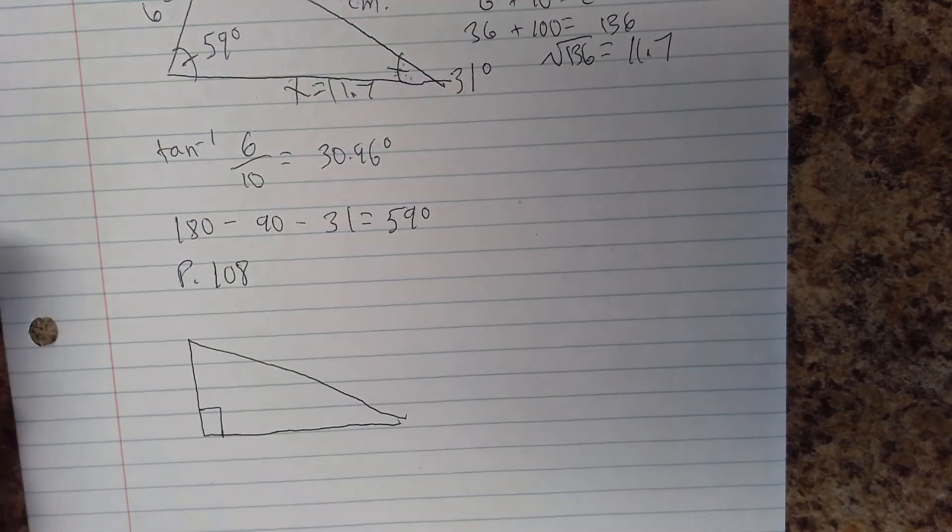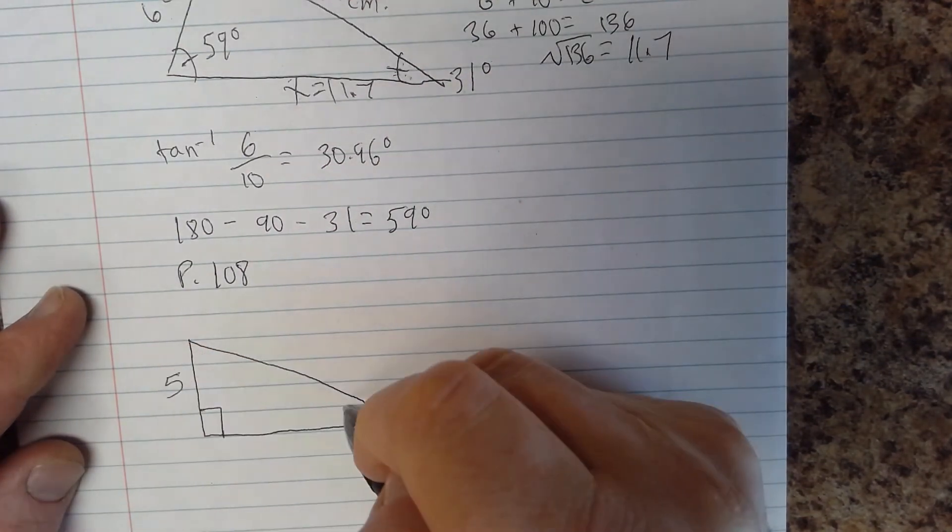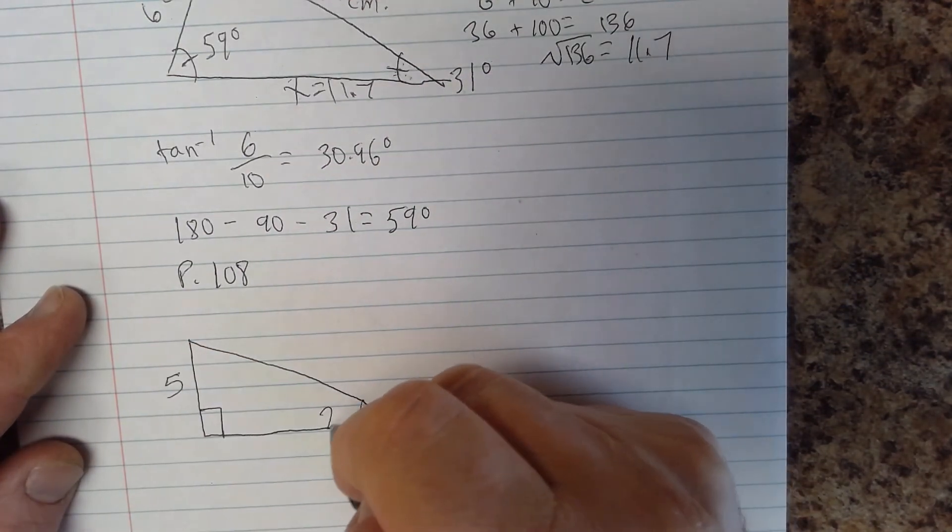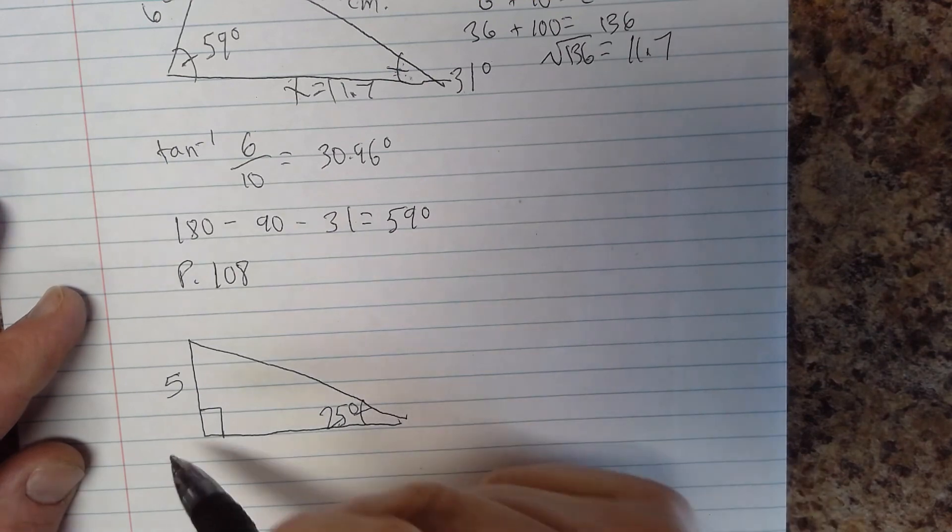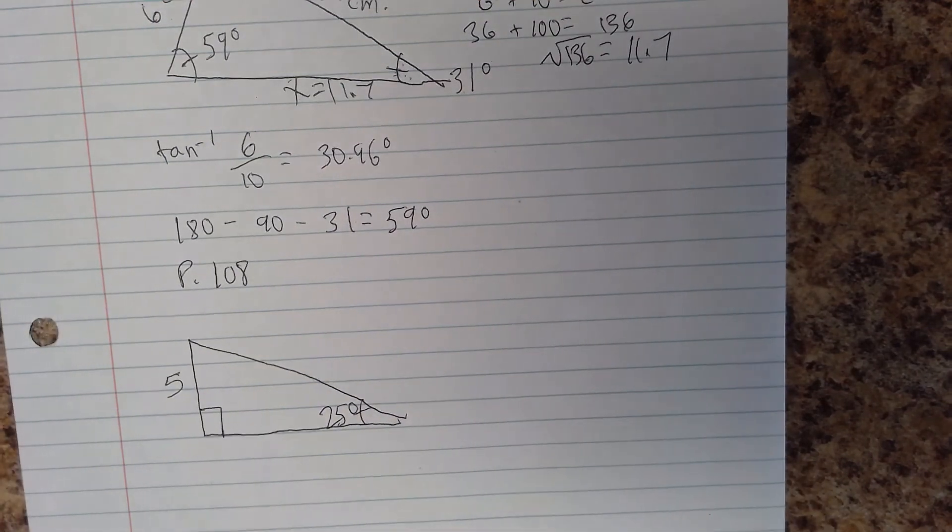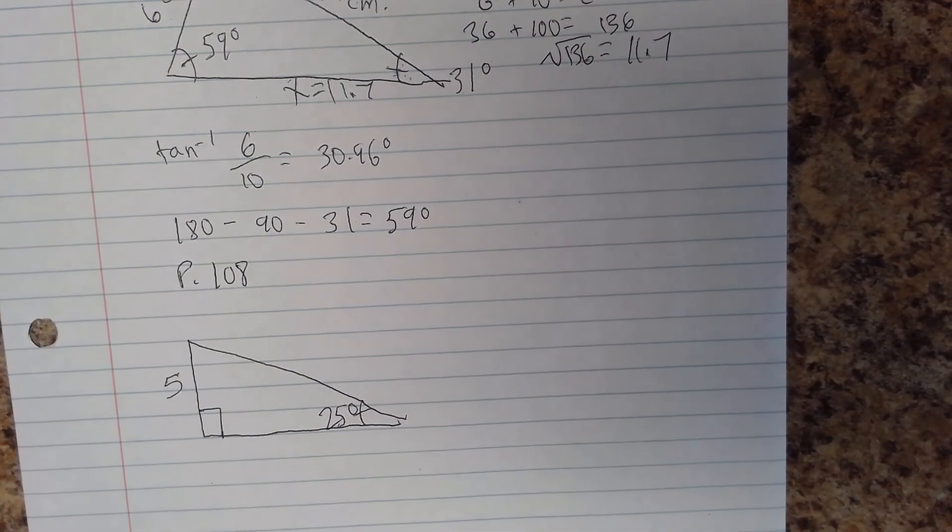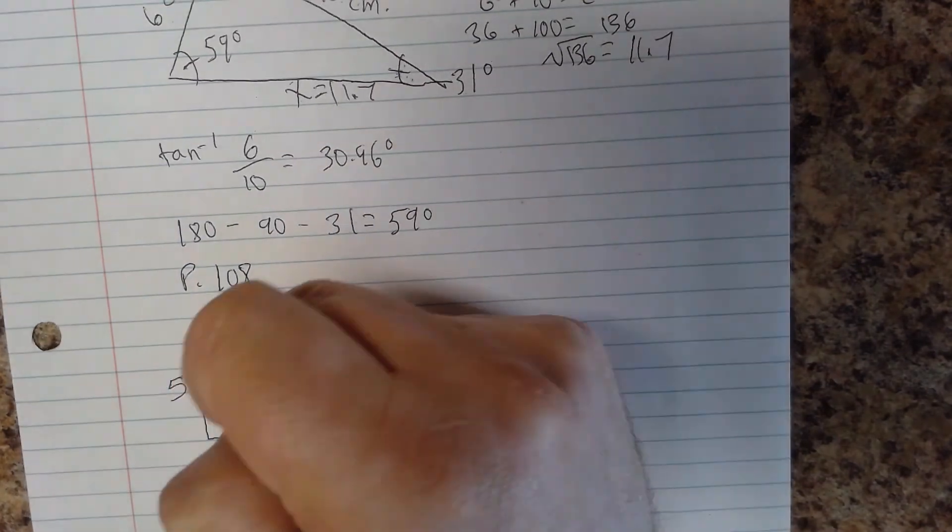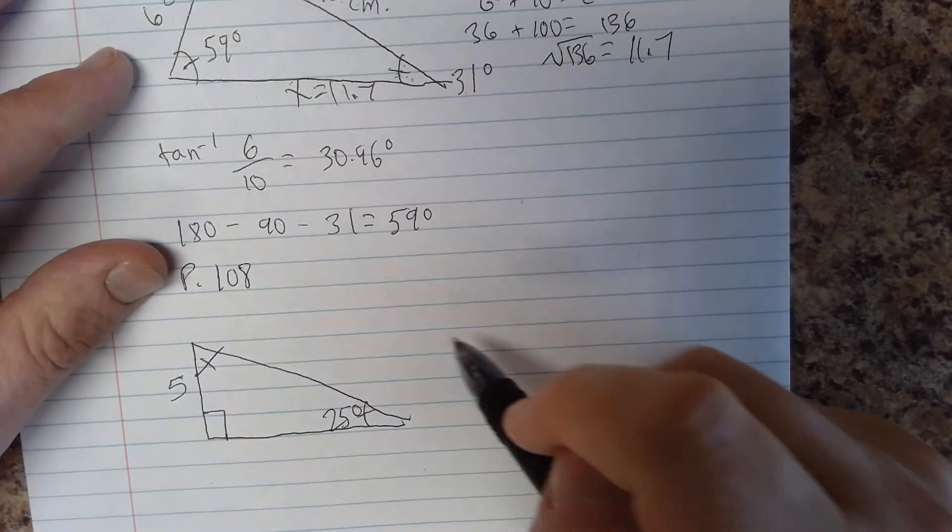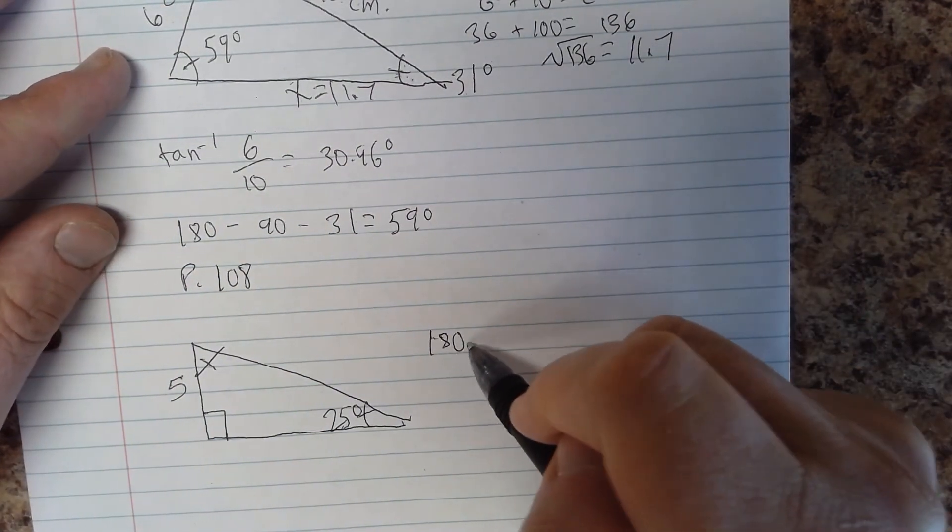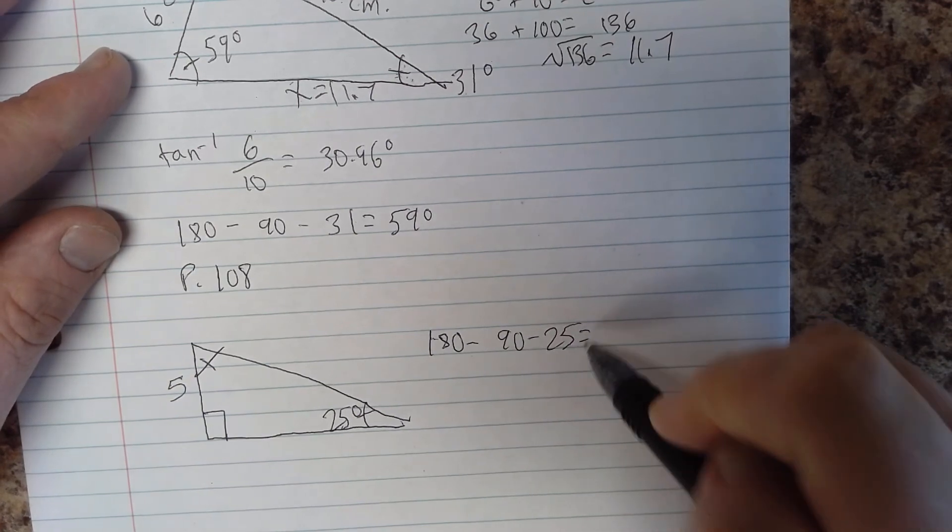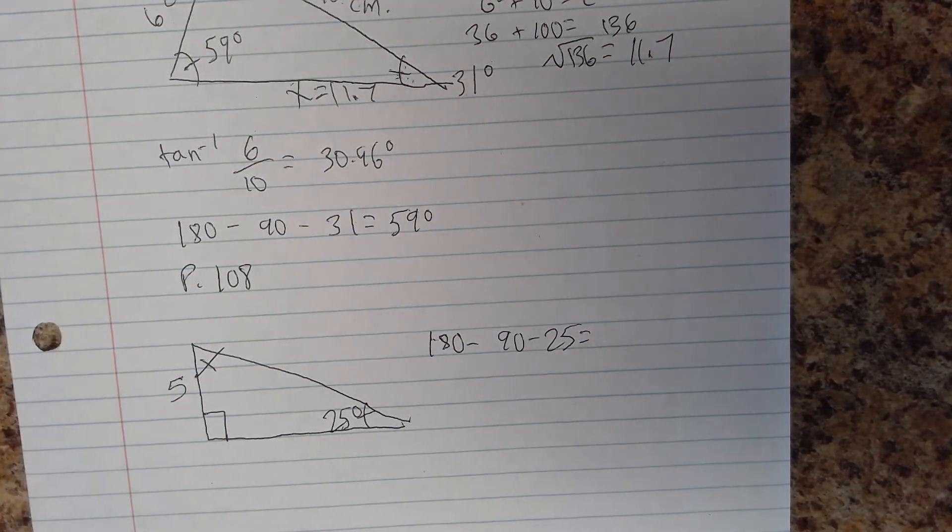And we have one side length of 5 and another side length of 25 degrees and a right angle. Well, our first job is easy, finding the third angle up here in the corner. Let's begin with that: 180 minus 90 minus 25, very simple.